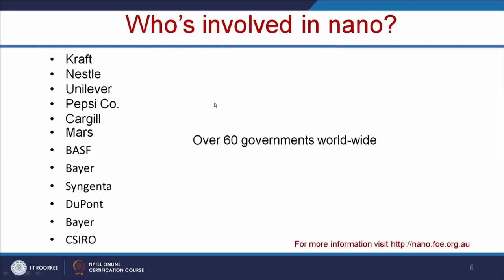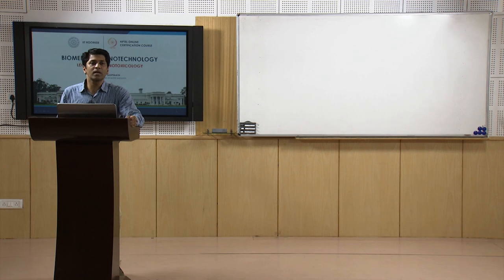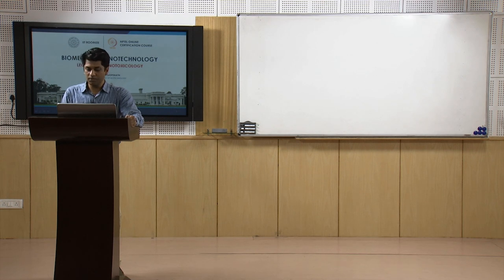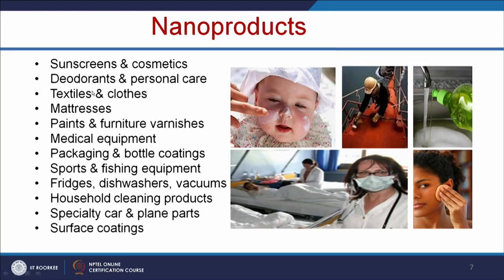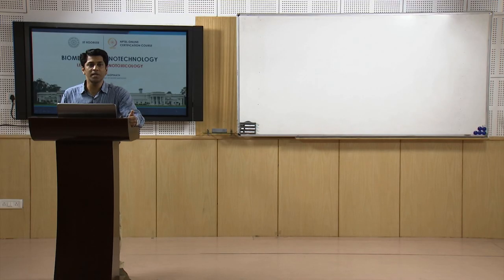Various companies including Nestle and Pepsi are involved in nano. Most companies produce products under the name of trade secrets or patent-protected laws, so we are not aware of what nanomaterials are in food products. Other nano-based products include sunscreen, cosmetics, baby diapers, baby bottles, and feeding bottles. Everything has started using nanomaterials and nano coatings, but we do not know what will be the long-term effects.